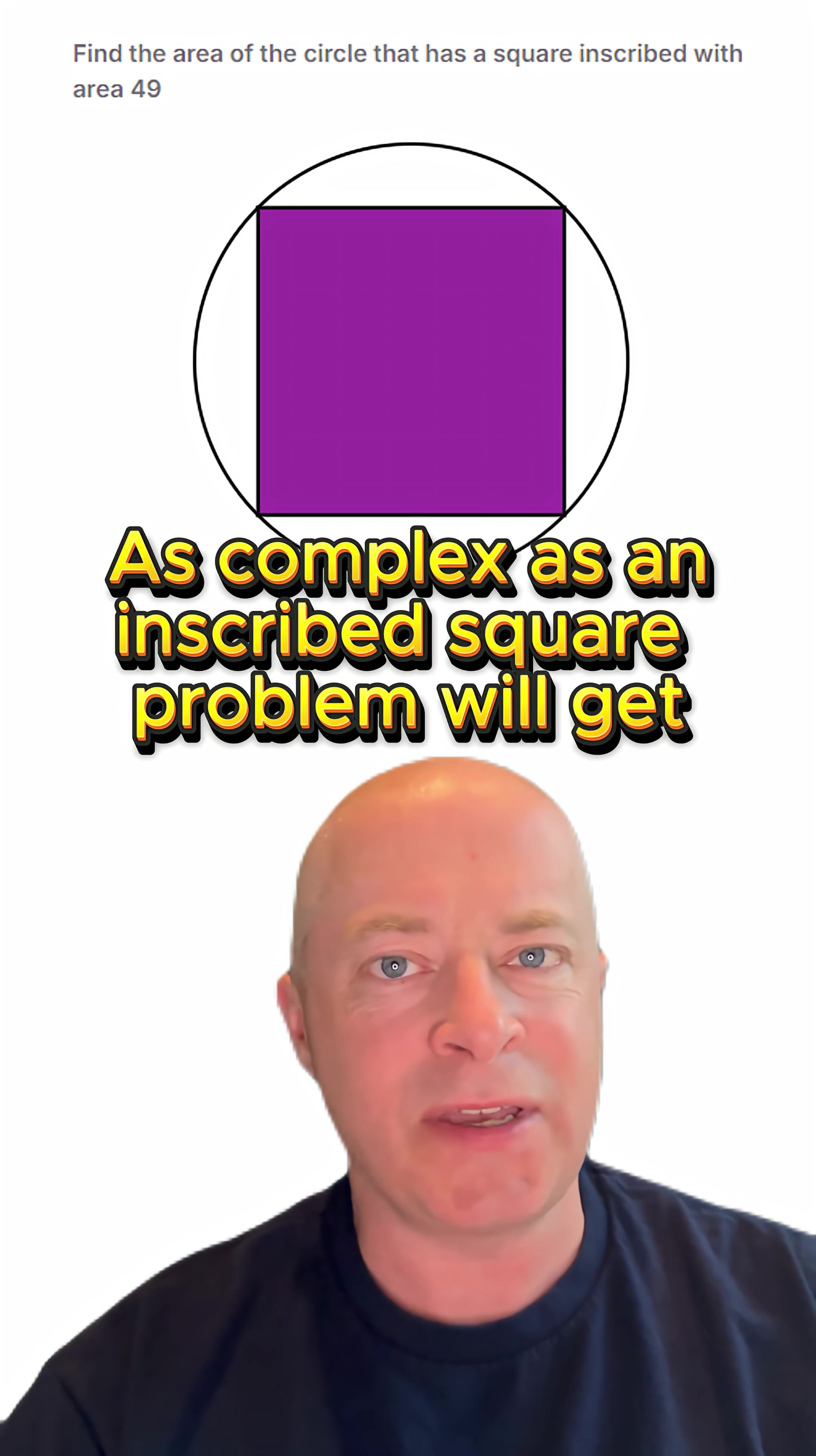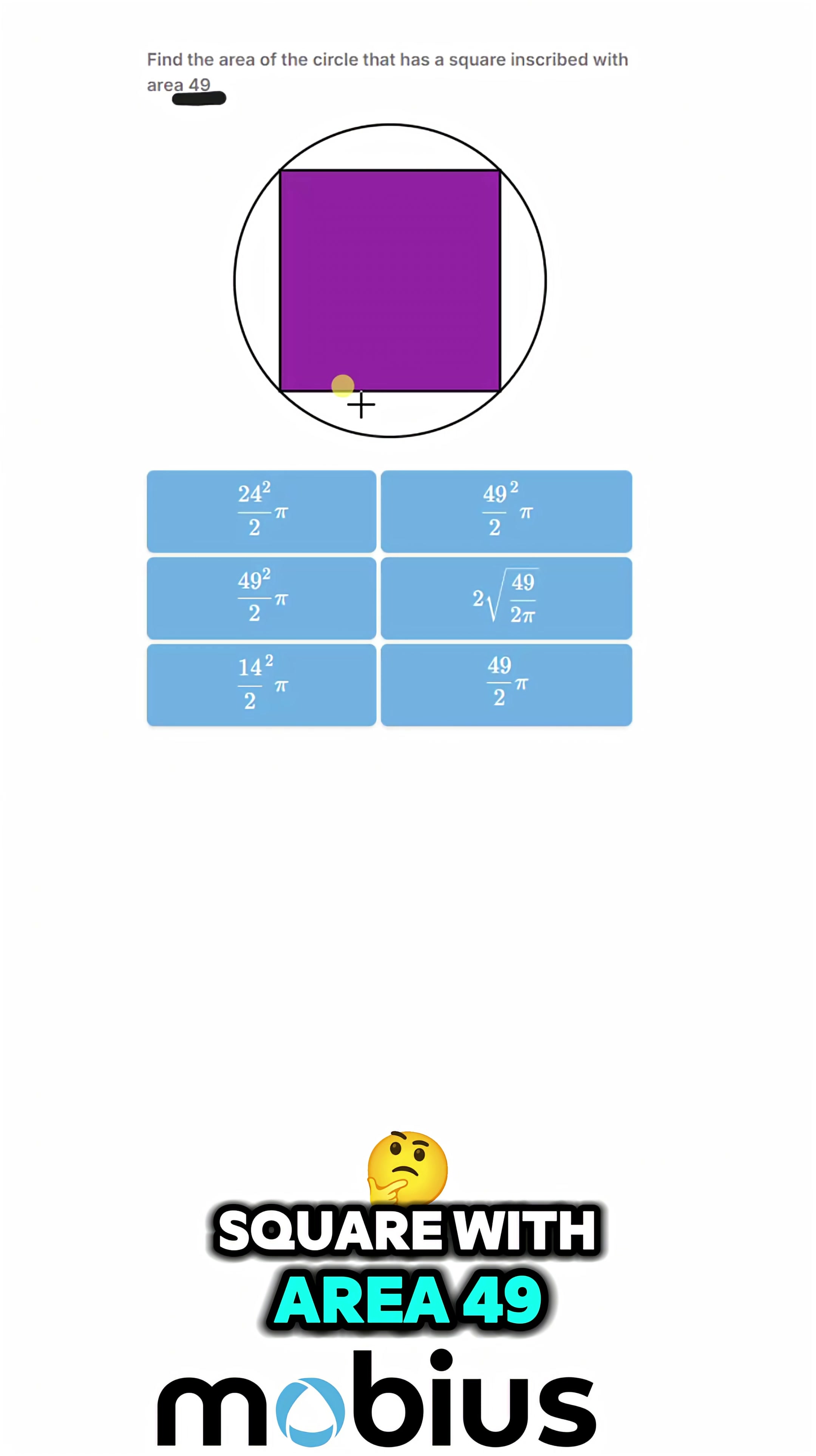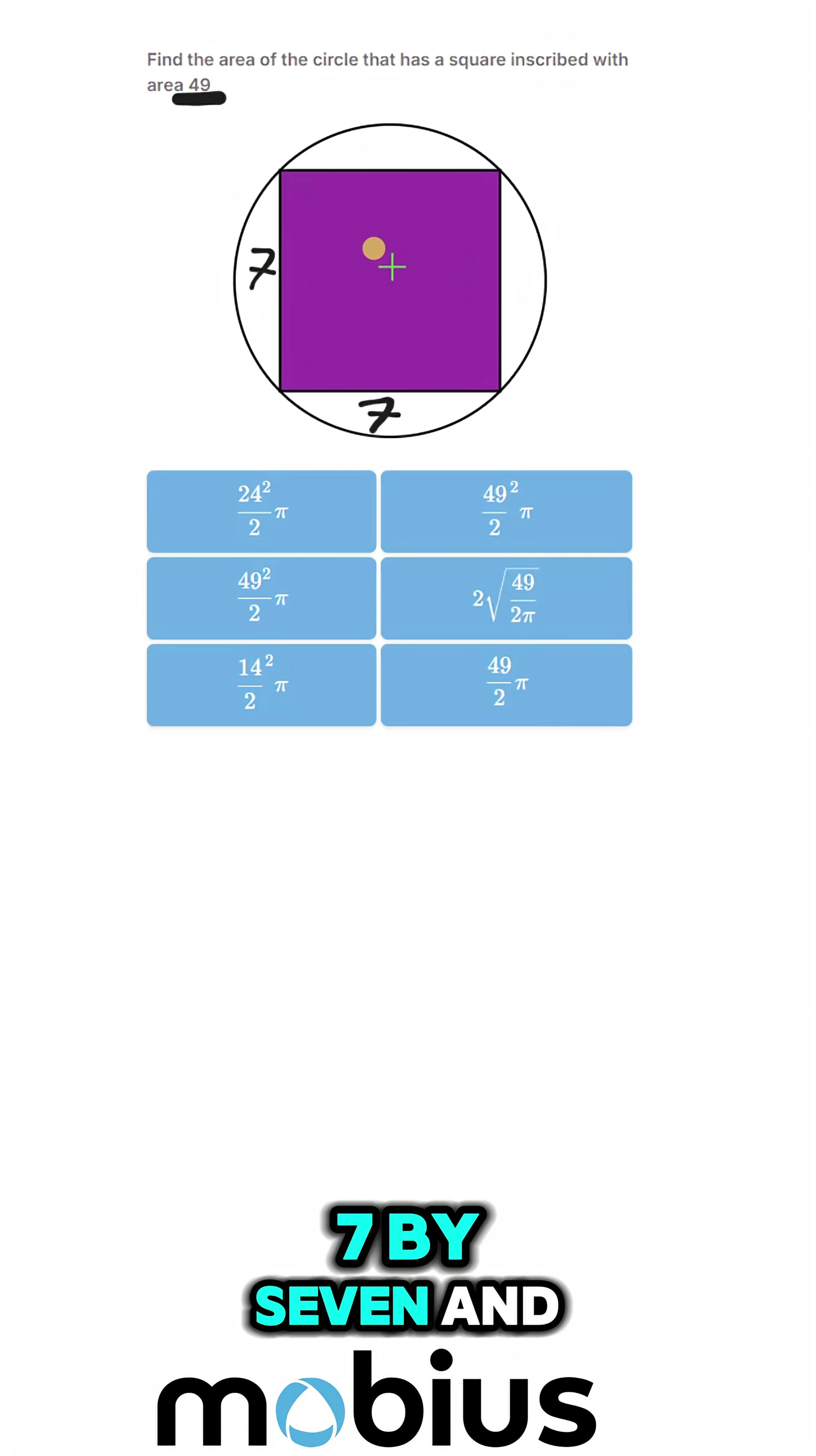This is about as complex as an inscribed square problem will get. If we have a square with area 49, that means the sides of our square are just 7 by 7.